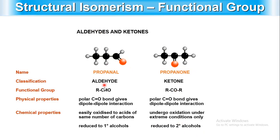Aldehyde has the functional group C-H=O, while ketone has C=O with two alkyl groups on the side chains (e.g., propanone). Physically, both have a polar carbonyl bond giving dipole-dipole interactions, so they behave similarly. Chemically, aldehyde is easily oxidized to a carboxylic acid and reduced to a primary alcohol, while ketone is generally reduced to a secondary alcohol and is not as easily oxidized.